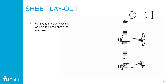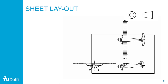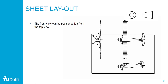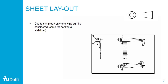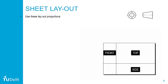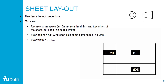Suppose you start with the side view. Relative to the side view, the top view can be placed above it. Relative to the side view, the front view can be placed on the left. But the sheet might end up being too small to place this configuration — all views should fit on the sheet. The front view also can be positioned left from the top view. This is a valid American projection. For this assignment, this is the proper layout of the views. You can leave out a single wing due to symmetry, but please draw the complete fuselage.